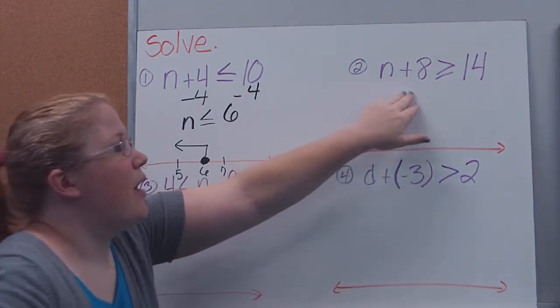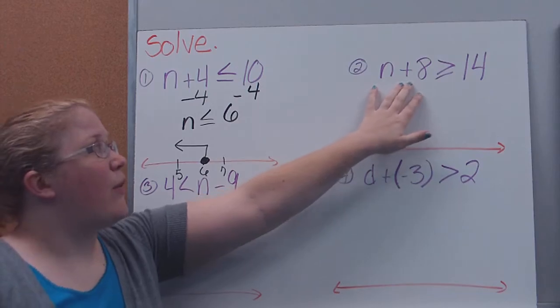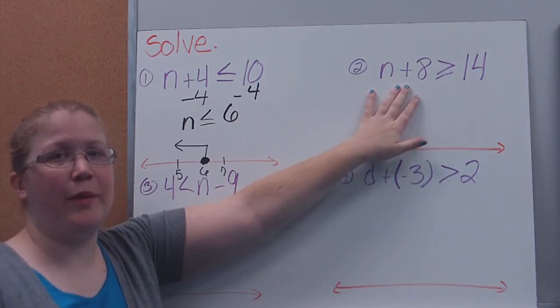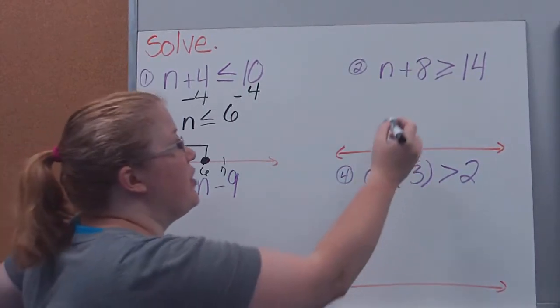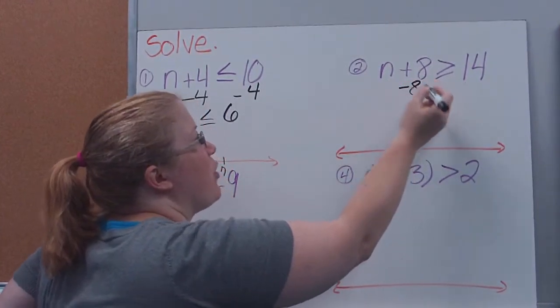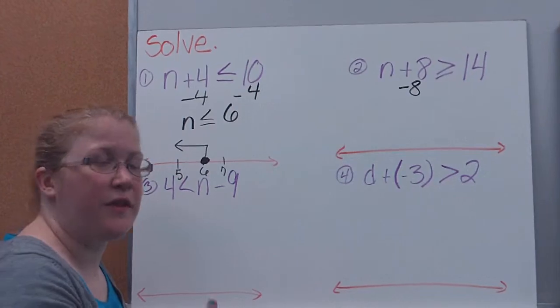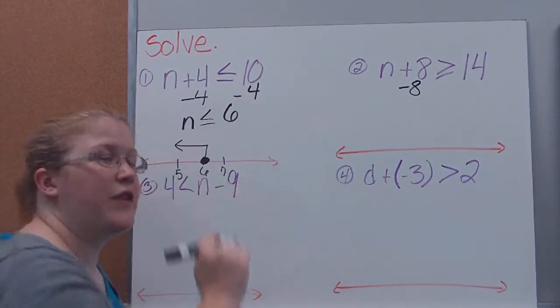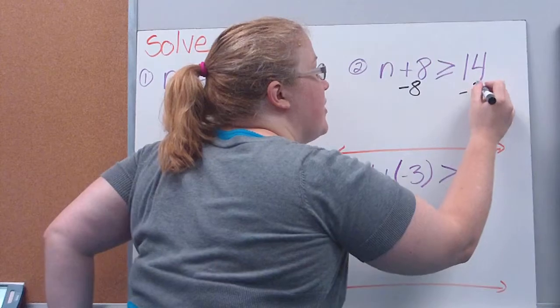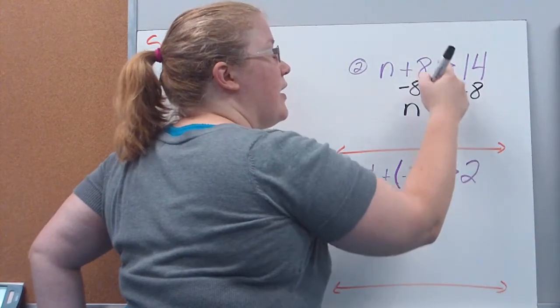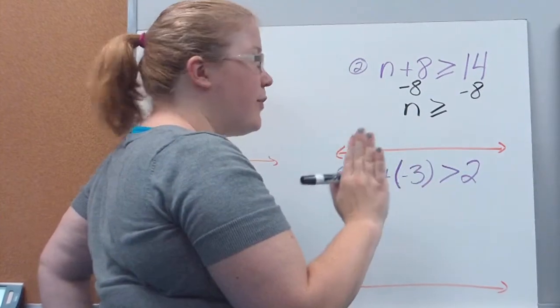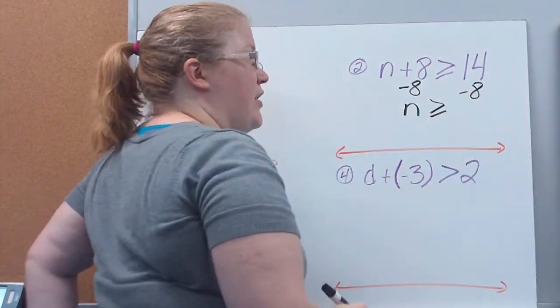So again, look over here. What operation is happening to my variable is the first thing I look at. It's addition. What is the inverse, or how can I undo that? Well, I'm going to have to subtract 8 to get n by itself, because I want n by itself on this side. Now, since I've done it to the one side, I need to do the same thing to the other side. So on this side, I'm left with n. Keeping my sign the exact same, don't mess with it, and then doing my math. 14 minus 8 gives me 6.